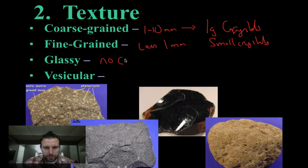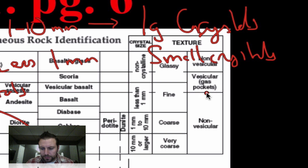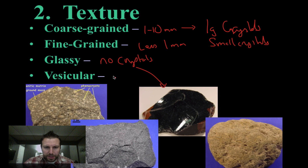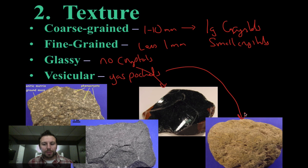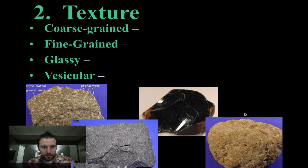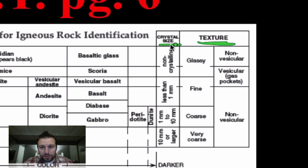Glassy means no crystals. Vesicular — let's take a look at the reference table — we see it says gas pockets. So vesicular means there are gas pockets. When a rock like pumice formed, it was ejected from the earth and cooled extremely fast. Any gases that were in that material when it cooled got trapped inside. These gas pockets or gases got trapped within the rock as it cooled. The texture on page six is associated with crystal size and tells us about the size of the crystals and whether or not it has gas pockets.